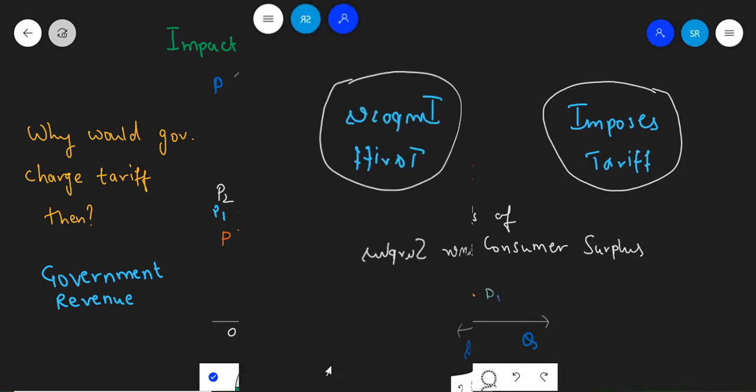We can also see that after the imposition of tariff, the quantity supplied by the domestic supplier increases from Q2 to Q3. This showcases that an increased tariff increases the domestic production for the particular product. As this increase is guided by the government's protectionist policies, we call this increase in production as the protective effect.